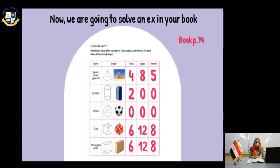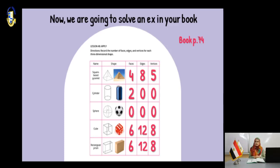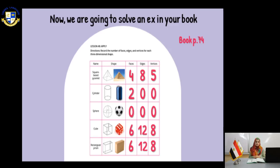The next shape is the cylinder — it looks like a can of Pepsi. It has two faces in the shape of a circle, zero edges, and zero vertices. The sphere, the ball, has zero faces, zero edges, and zero vertices. The cube is like a dice. It has six faces, 12 edges, and eight vertices — and remember, in the cube all the faces are squares. The rectangular prism has six faces, 12 edges, and eight vertices, and all the faces are rectangles. This is from your book page 74.